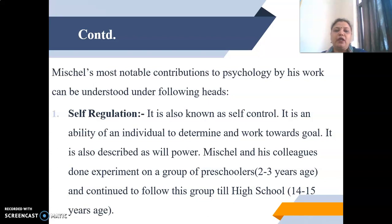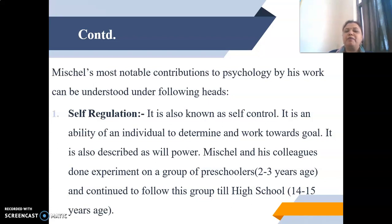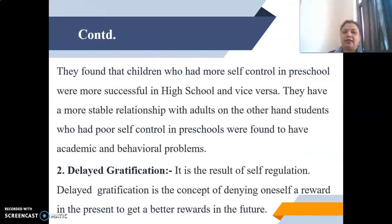Mischel's most notable contributions to psychology can be understood under the following headings. The very first is self-regulation, also known as self-control — it is an individual's ability to determine and work towards good, also described as willpower. Mischel and his colleagues conducted an experiment on a group of preschoolers aged 2 to 3 years, and continued to follow this group until high school, when they attained the age of 14 to 15 years.